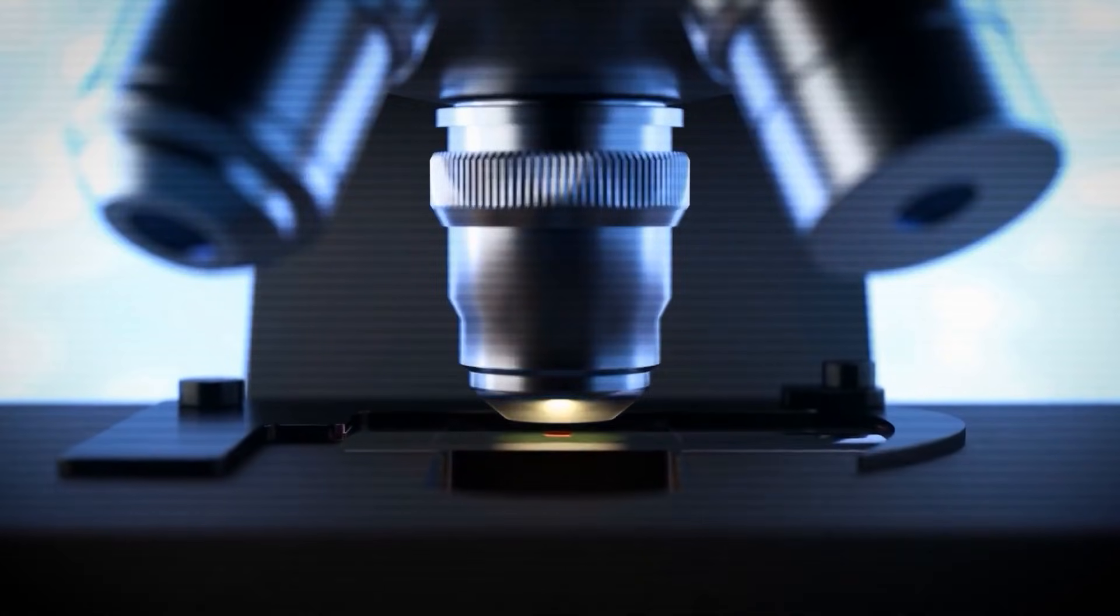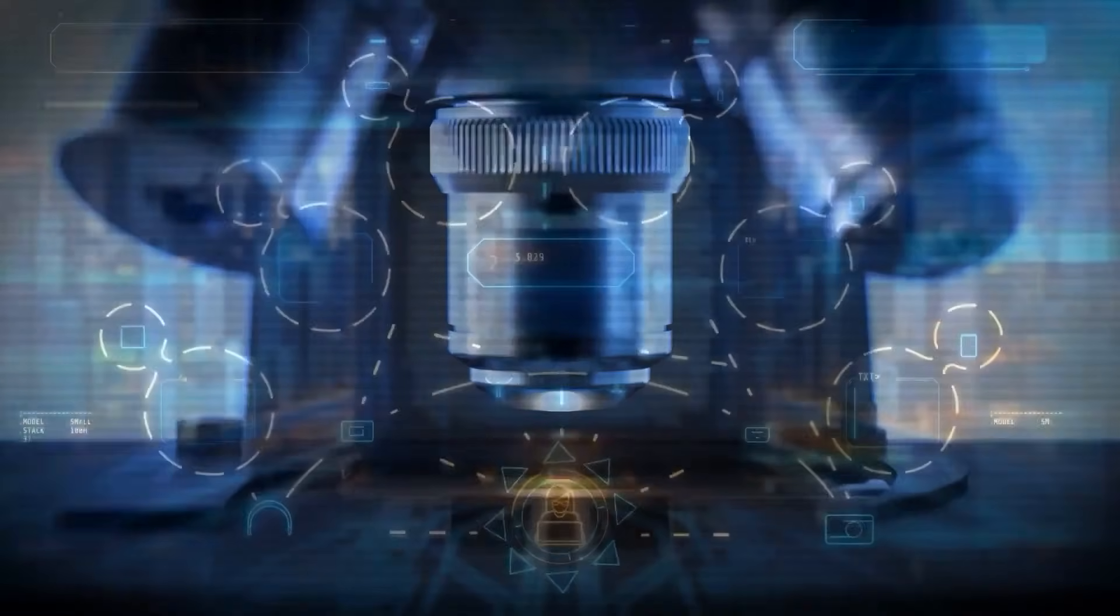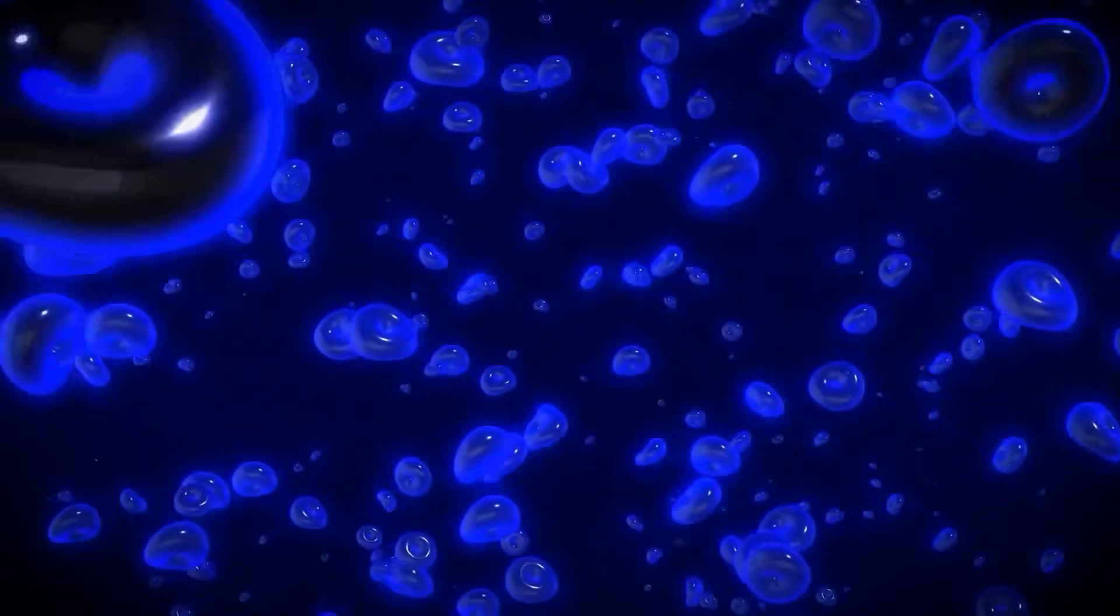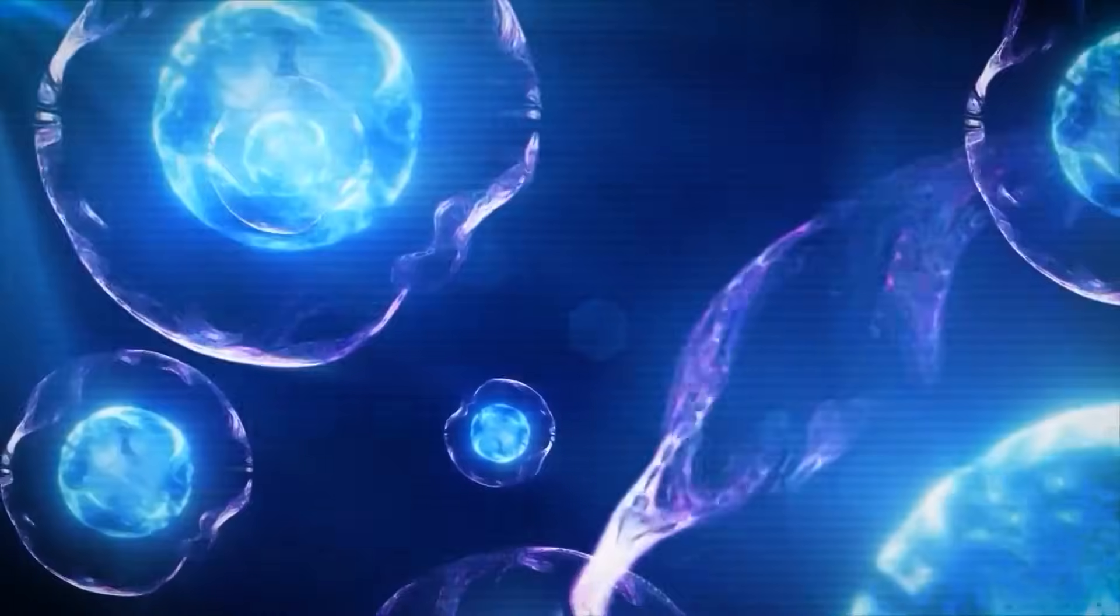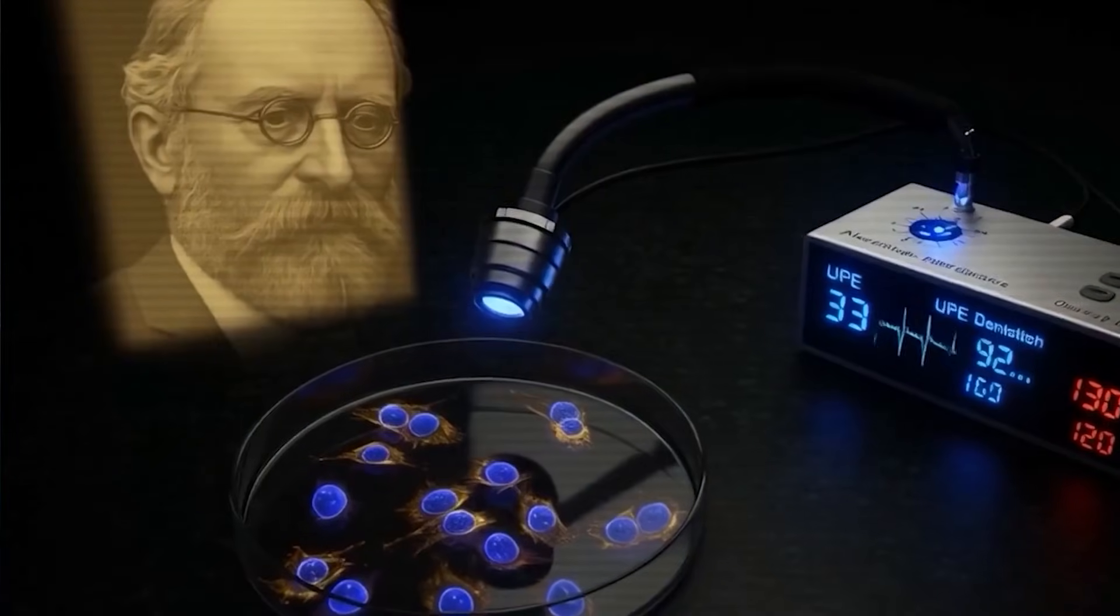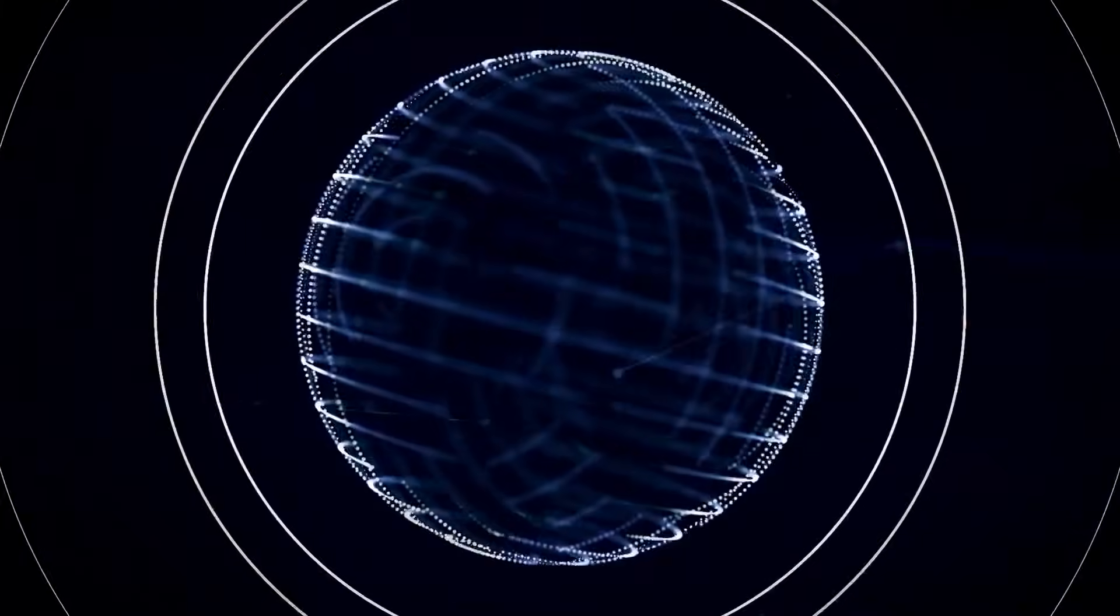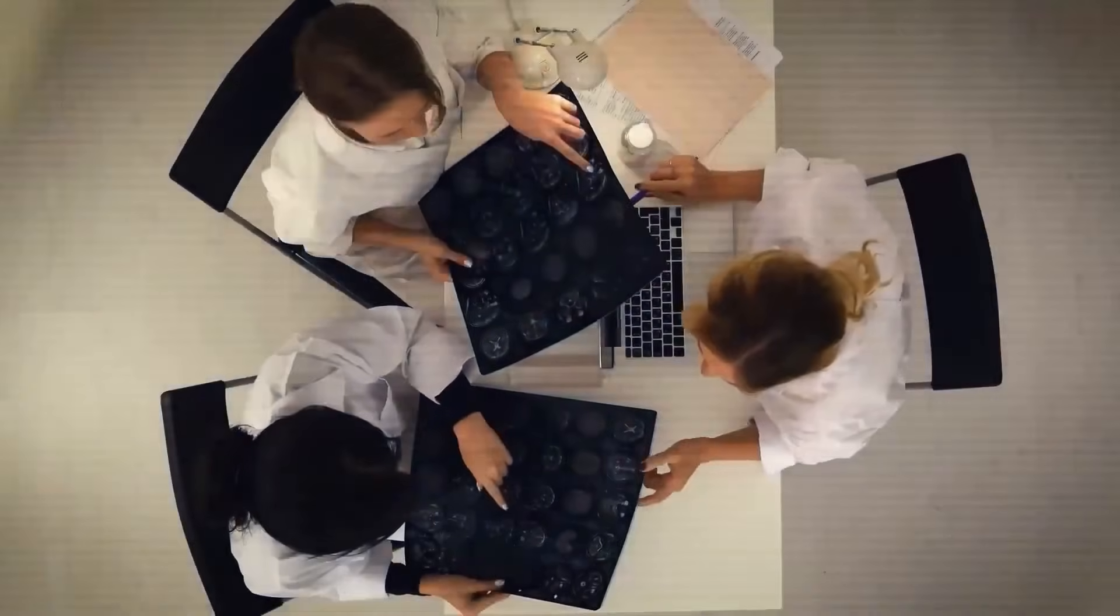Decades later, physicist Fritz Albert Popp became a light hunter. His mission: catch cells red-handed. Armed with ultra-sensitive photomultiplier tube detection, he finally proved Gurwich wasn't seeing things. Life glows. Popp's crucial discovery, built upon researchers like Roland Van Wijk and extensive biophoton studies.